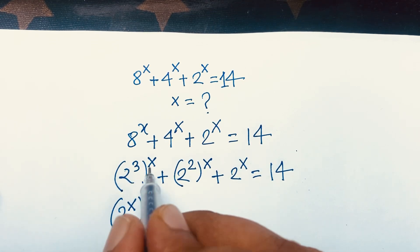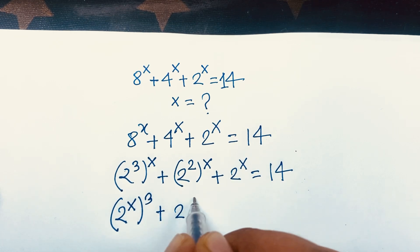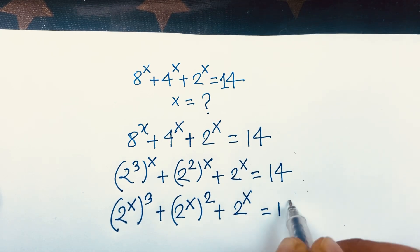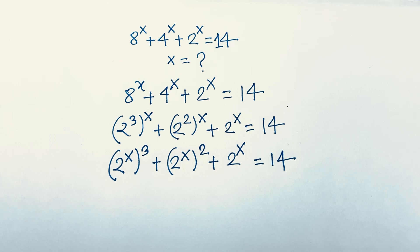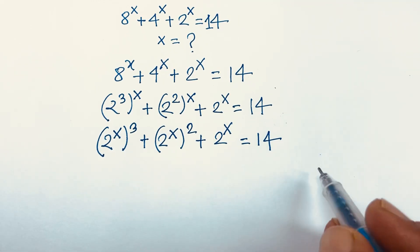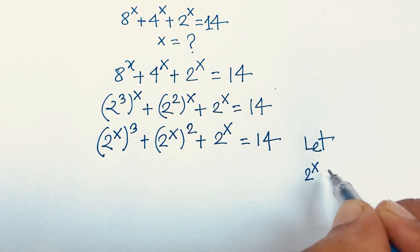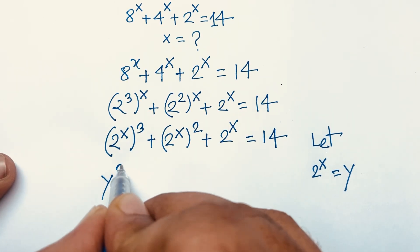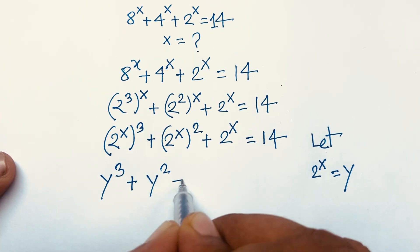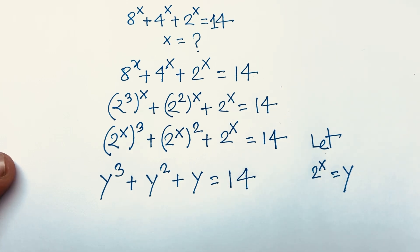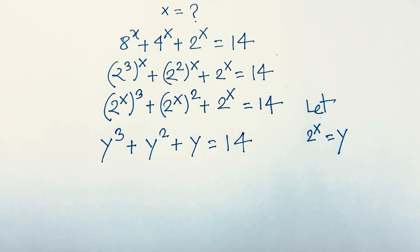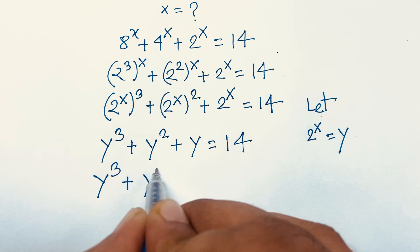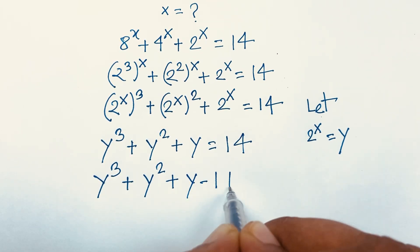I just move the outer power inside the bracket. So it becomes 2 to the power x, all to the power 2, plus 2 to the power x, is equal to 14. Then if I let 2 to the power x equal to y, this equation becomes y to the power 3 plus y squared plus y minus 14 is equal to 0.